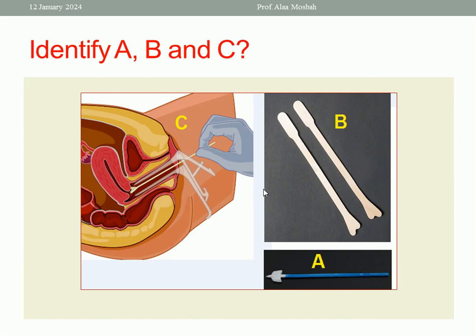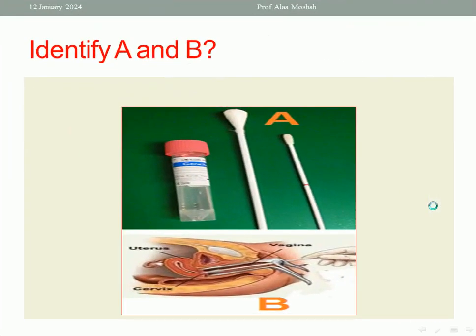This is one of the most important screening programs done in every part of the world. Let us go to the next. Identify A and B. Look to this picture and identify A and B. A is cotton-tipped swab. B is cervical swab for infection.